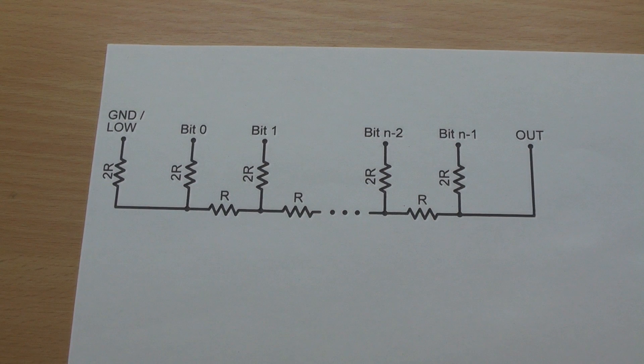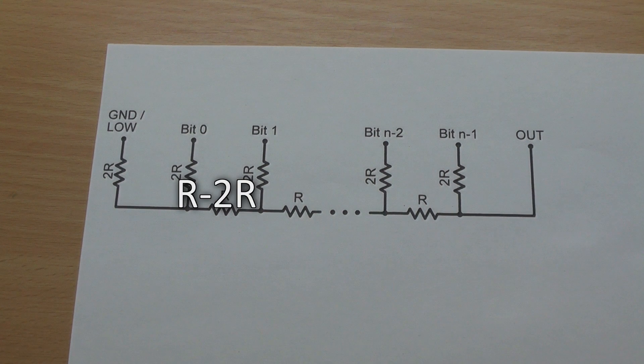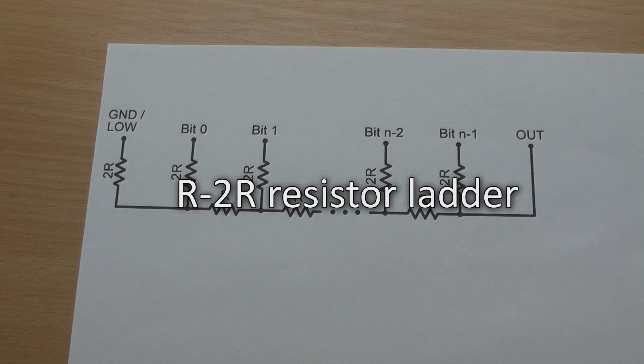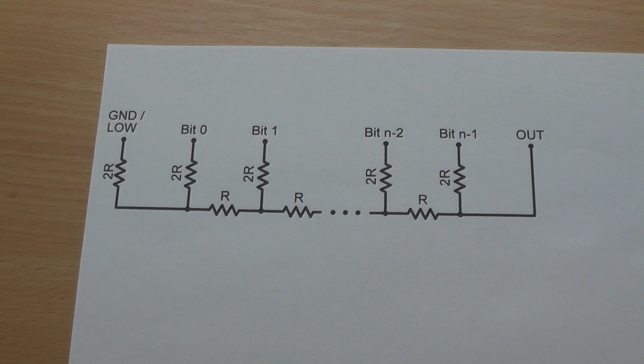Hi, today we will take a look at the R2R resistor ladder, which is a circuit to convert digital to analog voltage.